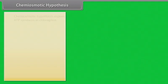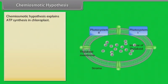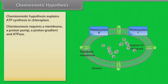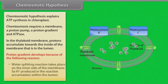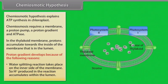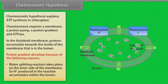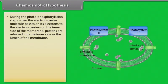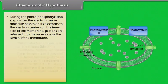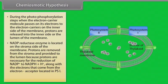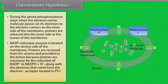The chemiosmotic hypothesis explains ATP synthesis in the chloroplast. Chemiosmosis requires a membrane, a proton pump, a proton gradient, and ATPase. In the thylakoid membrane, protons accumulate towards the inside of the membrane — that is, in the lumen. The proton gradient develops because the water-splitting reaction takes place on the inner side of the membrane, causing hydrogen ions to accumulate in the lumen. During photophosphorylation, when electron carrier molecules pass electrons to carriers on the inner side of the membrane, protons are released into the lumen. NADP reductase enzyme is located on the stroma side of the membrane, removing protons from the stroma.